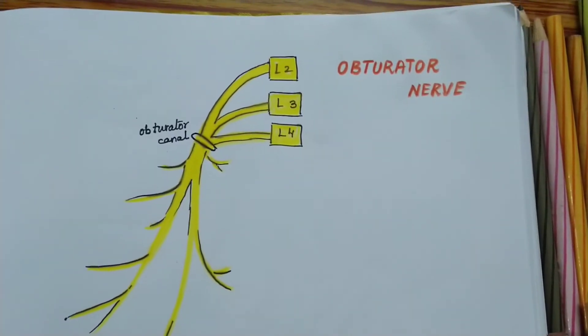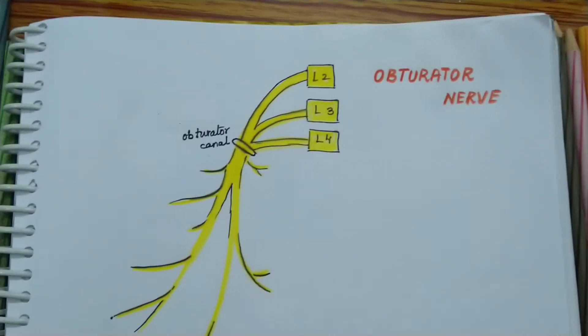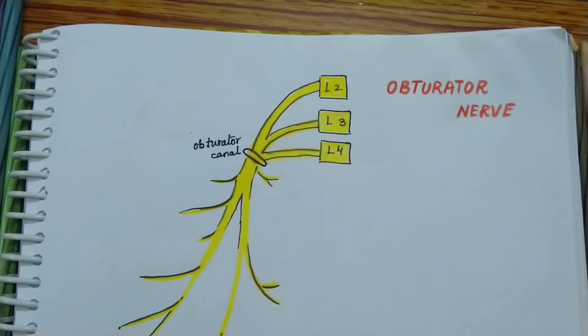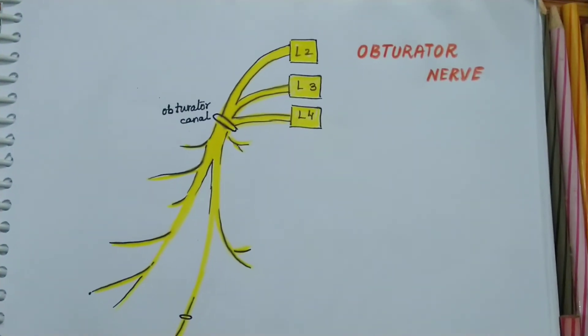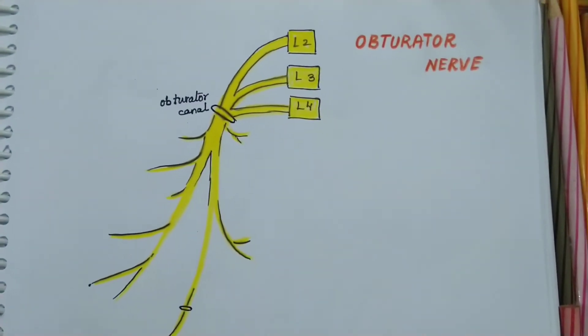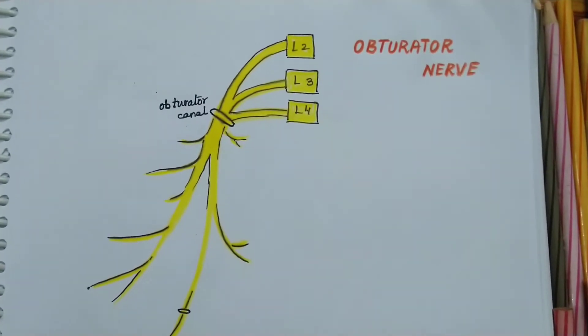Obturator nerve. It is the chief nerve of the adductor compartment of the thigh or the medial compartment of the thigh. It arises from the lumbar plexus in the abdomen.